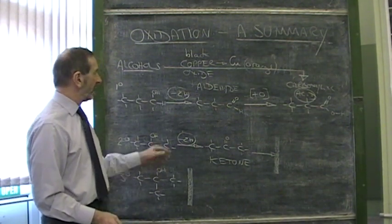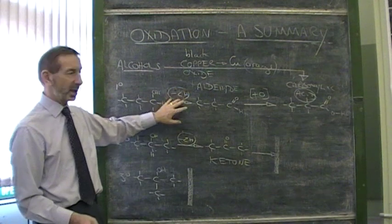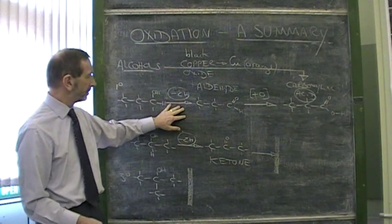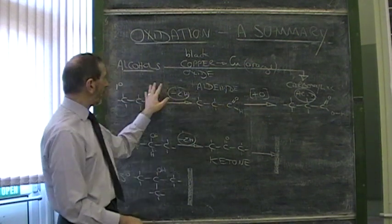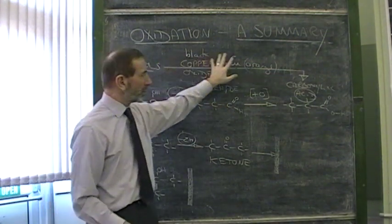Five oxidizing agents. The acidified permanganate and acidified dichromate here. The Tollens reagent and the Benedict's reagent here. And the copper oxide all the way through.